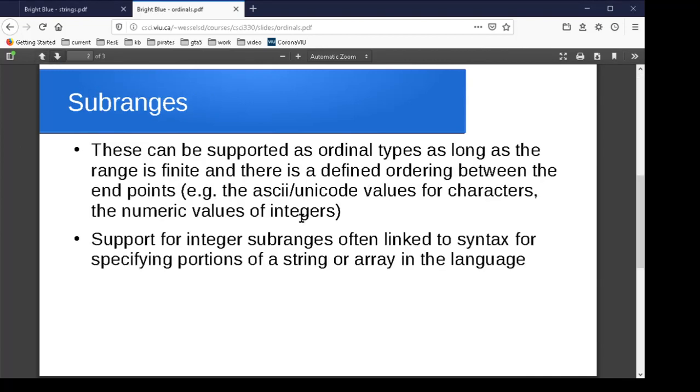We'll consider the sub-ranges first. The idea is as long as you've got a finite set of values within a range and there's a definite ordering of those values, so for instance if you specify the integers from 30 to 50, it's easy for the compiler to say okay well 31's in that range, 77 isn't, or if you're talking about characters as long as you've got a clear ordering on the characters say by their ASCII values, then you can say is this particular character somewhere in that range or is it not.